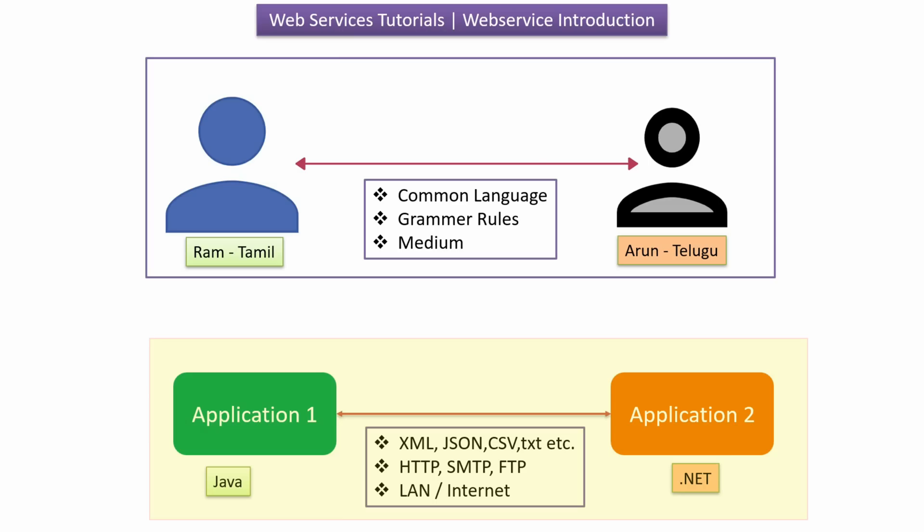So web services allow different applications to communicate with each other, even if they are built using different technologies, by using common formats and protocols — just like people with different native languages can communicate using a common language.